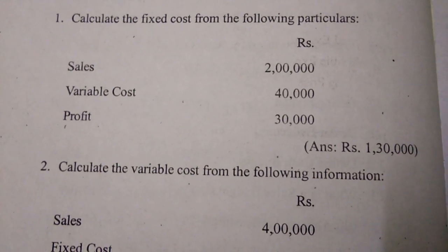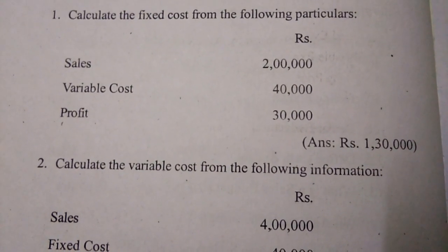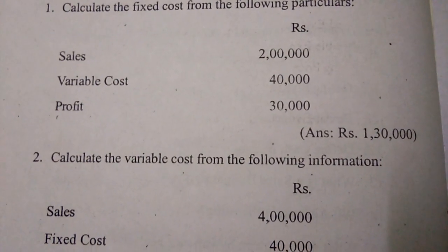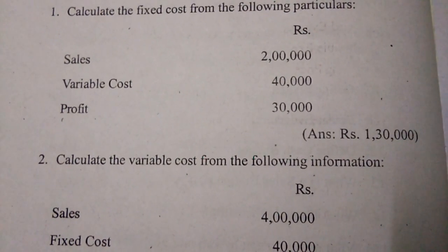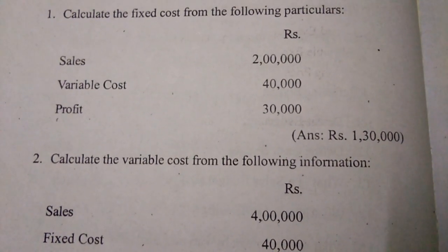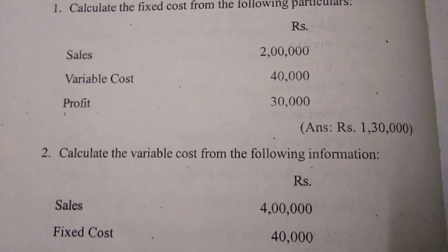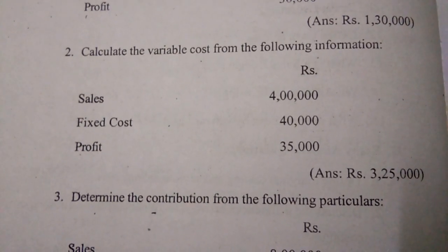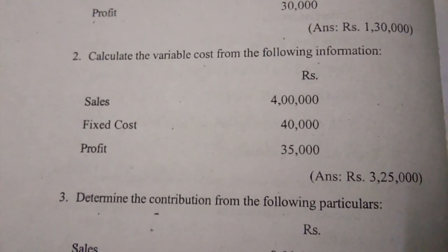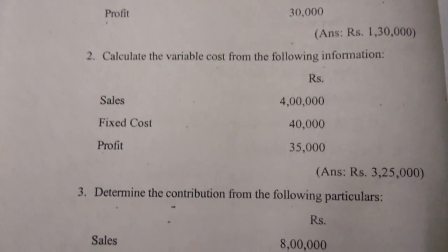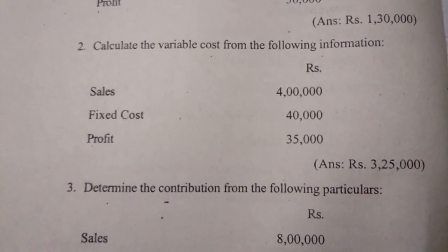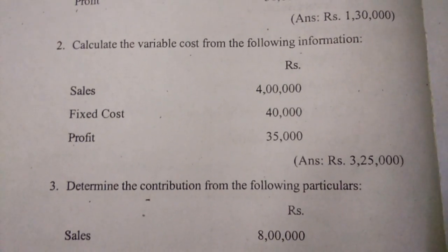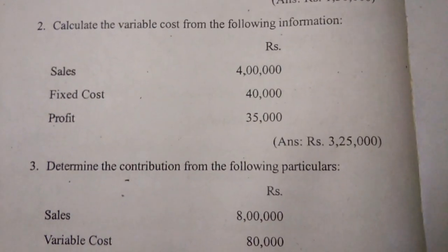Calculate the fixed cost from the following particulars: sales two lakhs, variable cost forty thousand, profit thirty thousand — that equals one lakh thirty thousand. Second one: calculate the variable cost from the following information: sales four lakhs, fixed cost forty thousand, profit thirty-five thousand.